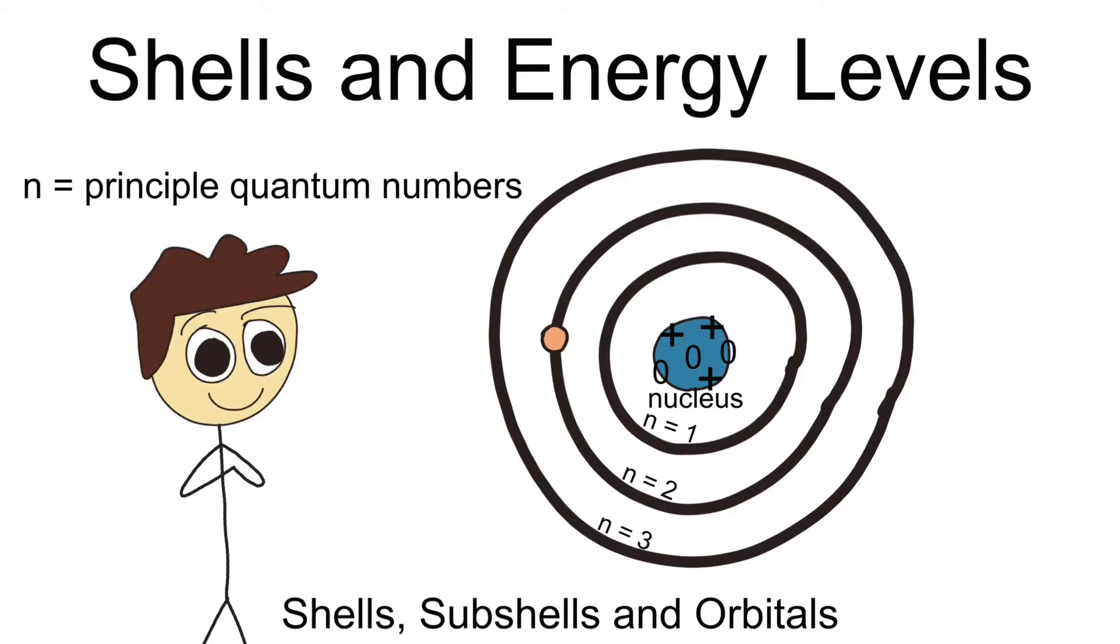Now, each energy level, aka shells, can only hold a specific number of electrons total for that example. The first energy level can hold up to 2 electrons, the second can hold up to 8, the third is up to 18, and so on. There's actually a really simple formula to determine how many electrons an energy level can hold, but we'll talk about that later on.